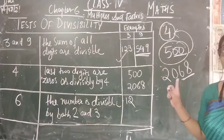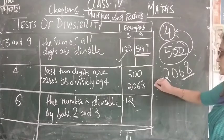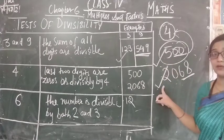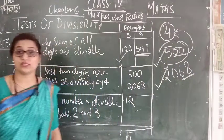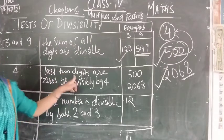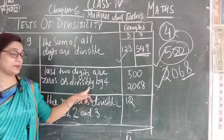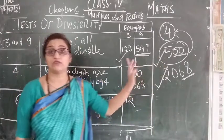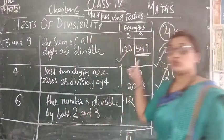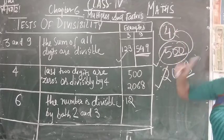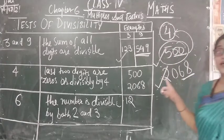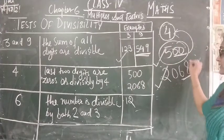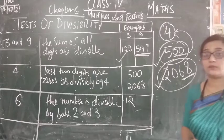If you divide 68 by 4, there will be no remainder. So 2068 and 500 both are examples of divisibility by 4, obeying the conditions of this test. The conditions for the test of 4 are: the last 2 digits are 0s, or the last 2 digits are divisible by 4. For 500, its last 2 digits are 0s, so 500 is divisible by 4. For 2068, the last 2 digits are 68, and 68 can be divided by 4 leaving no remainder, so 2068 is divisible by 4.